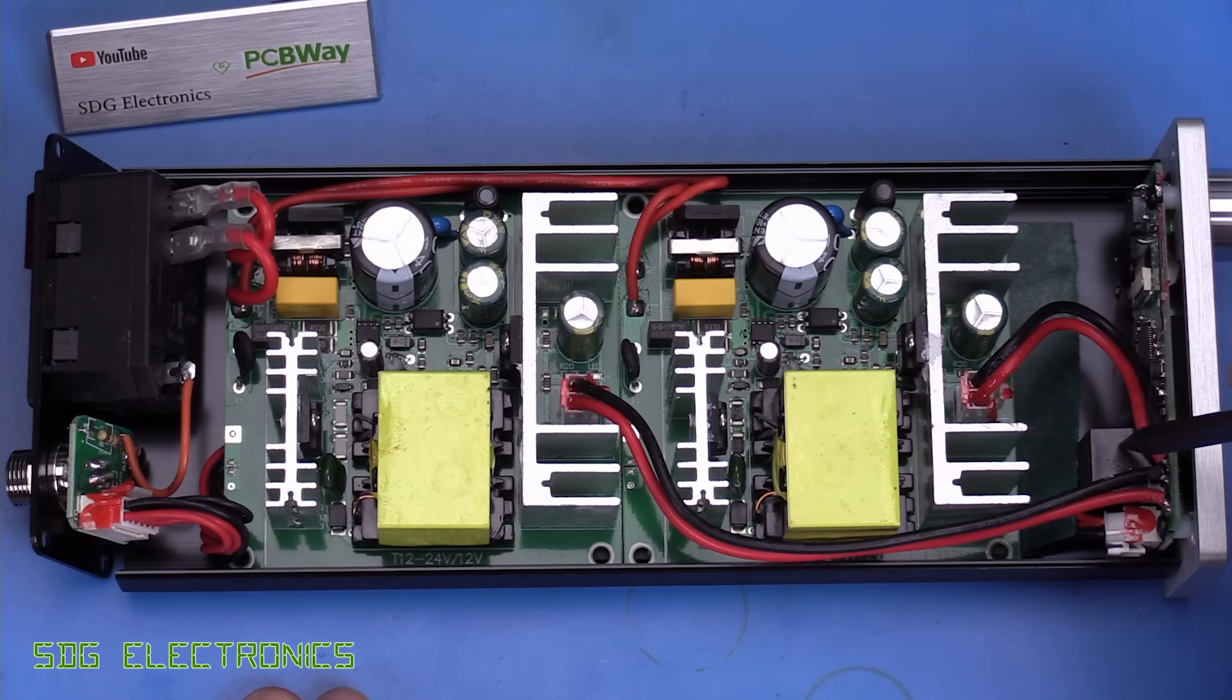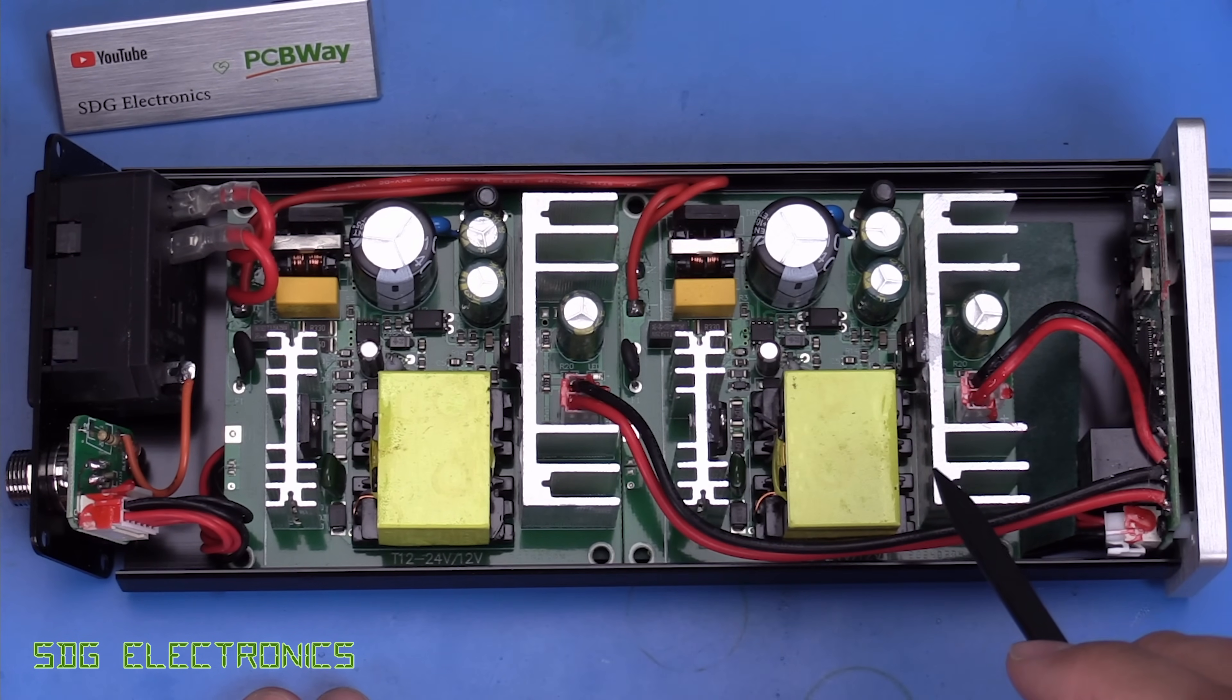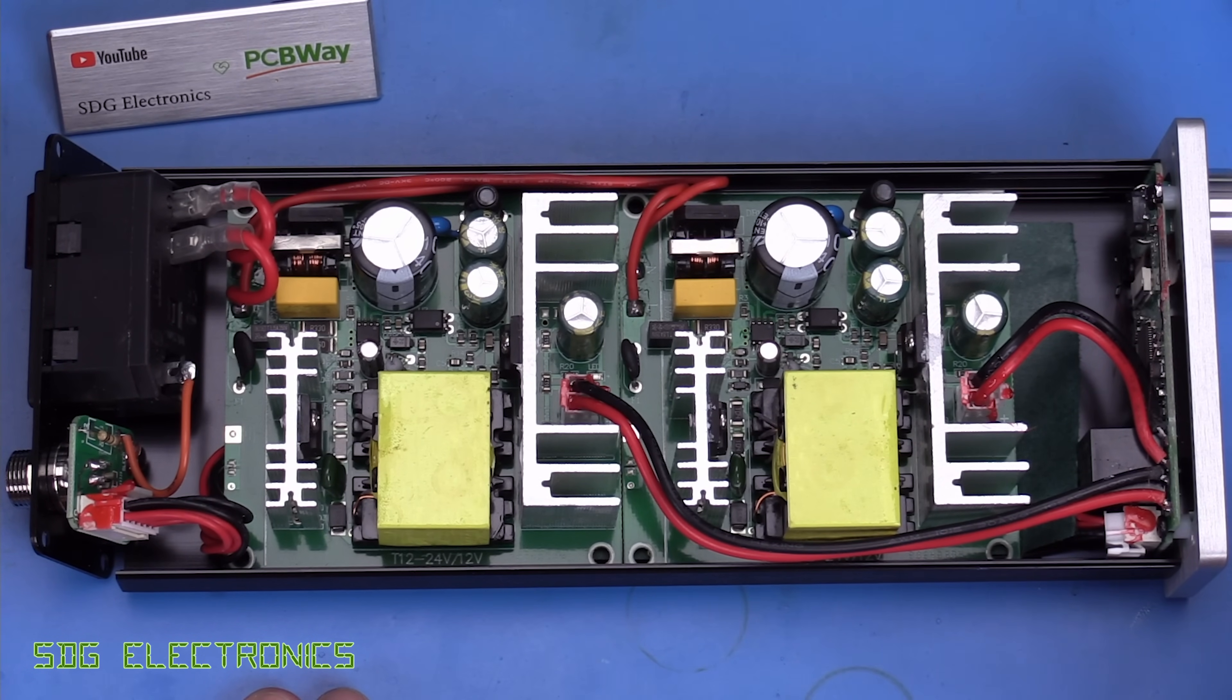And at first glance, I do notice there's a relay just here. So I wonder if just one is used when we're using a T245 cartridge, and then they're put into series for the larger C470 cartridge. But we'll have a look at the front panel board in a moment.